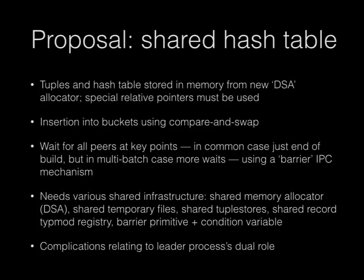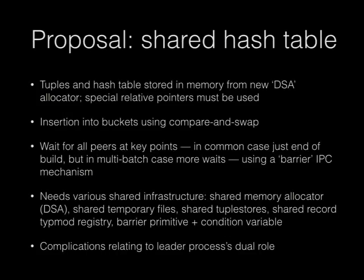Some of the infrastructure I had to build to get this working included: a shared memory allocator that manages DSM segments — this has been committed into Postgres 10 and is also used by parallel bitmap heap scan; shared temporary files, which involved quite a bit of discussion with Peter Geoghegan, whose parallel CREATE INDEX can also benefit from them; shared tuple stores; a shared record type cache registry; and a couple of other pieces. I also had to write an IPC barrier mechanism.